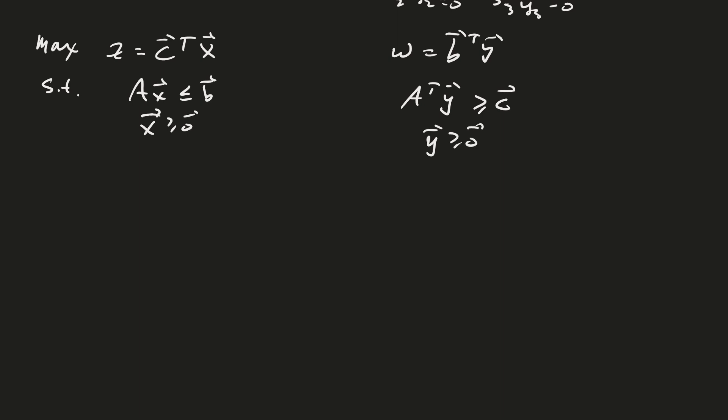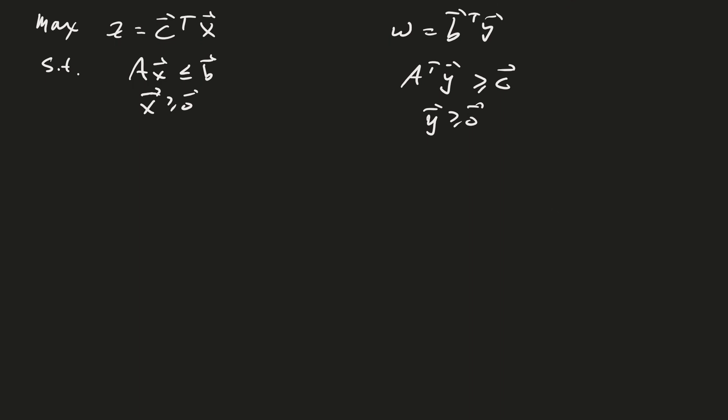x greater than or equal to 0, y greater than or equal to 0. We're going to prove the theorem only in this case. We have feasible points for our primal and our dual.